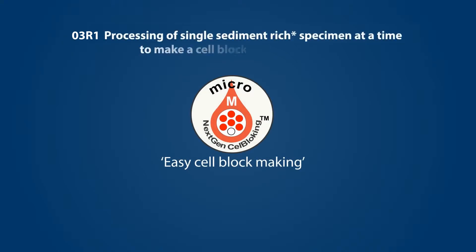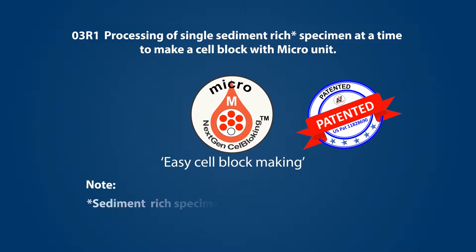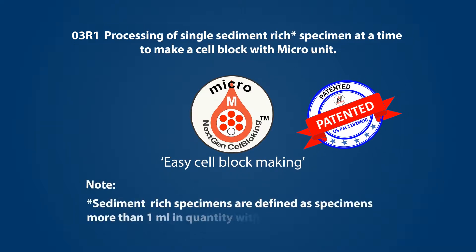Processing of a single sediment-rich specimen at a time to make a cell block with the micro unit. Note: sediment-rich specimens are defined as specimens more than 1 ml in quantity with more than 50% tissue crit.